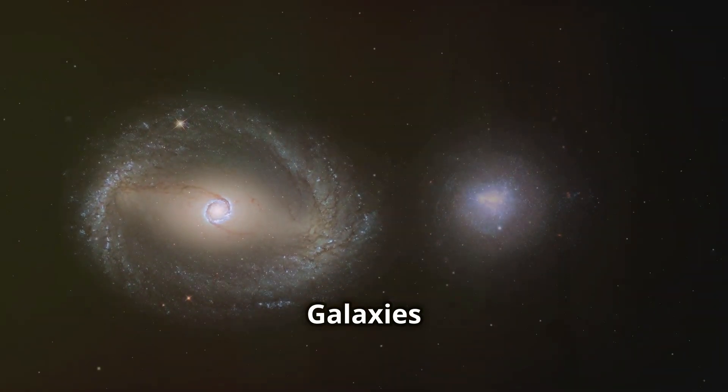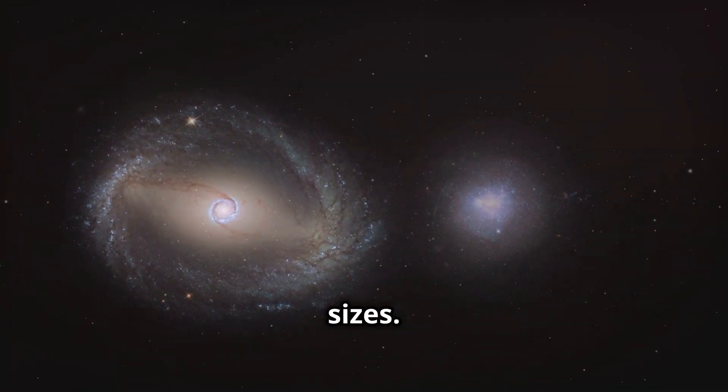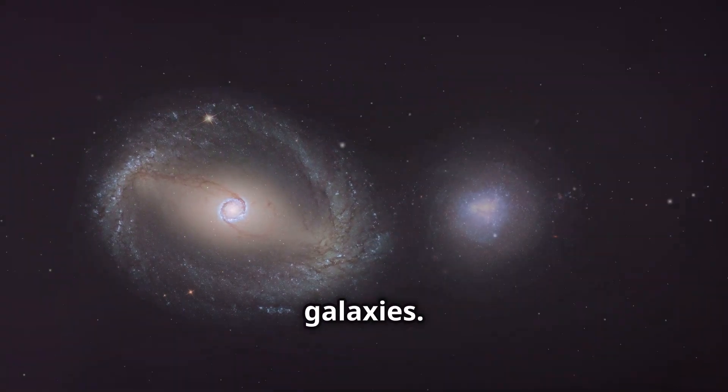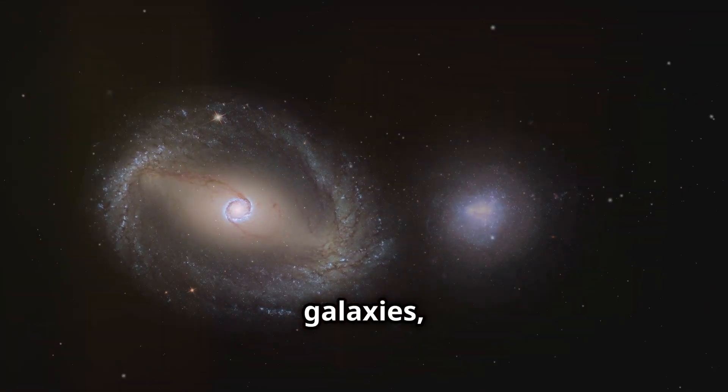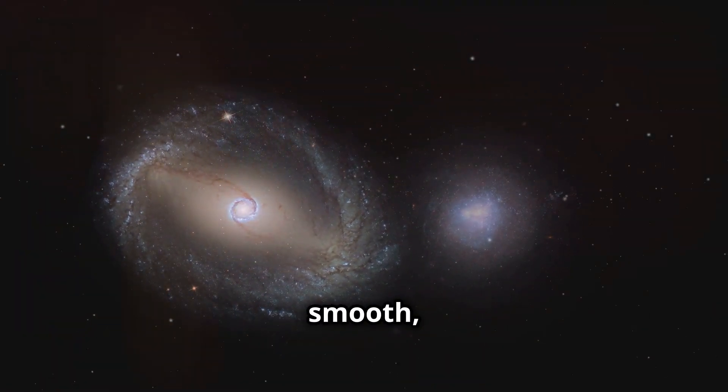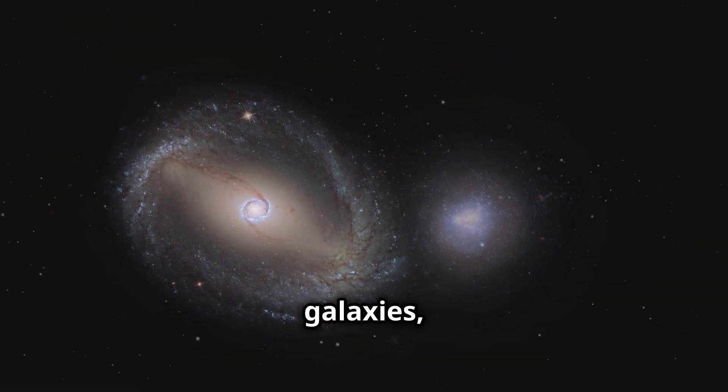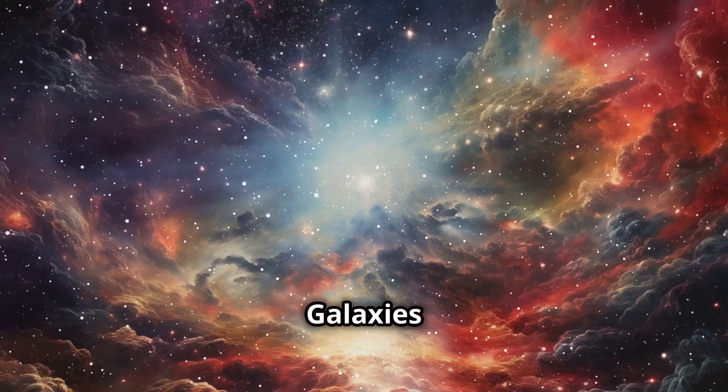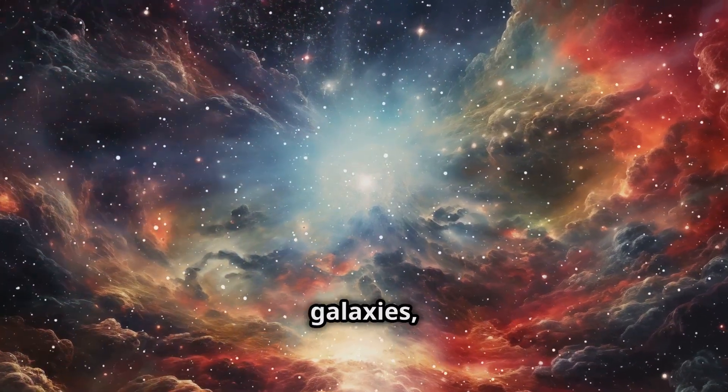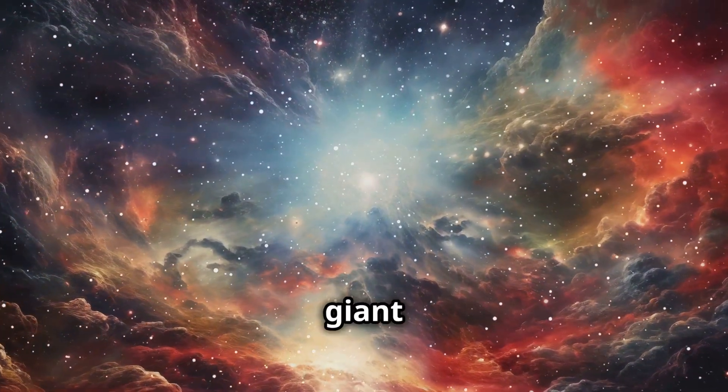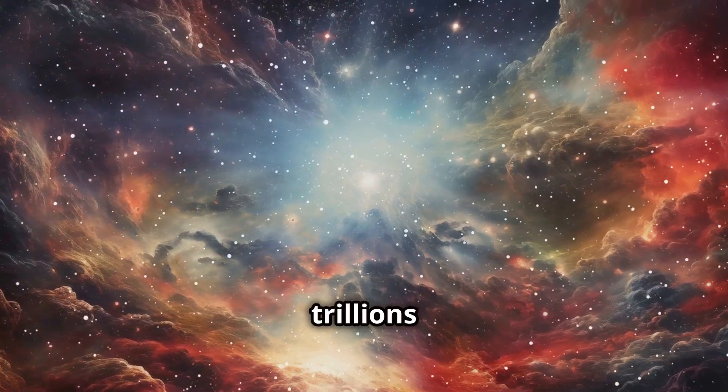Galaxies come in a variety of shapes and sizes. Some, like our Milky Way, are spiral galaxies. Others are elliptical galaxies with a smooth oval shape, and then there are irregular galaxies with no defined shape. Galaxies range in size from dwarf galaxies containing a few million stars to giant galaxies harboring trillions of stars.